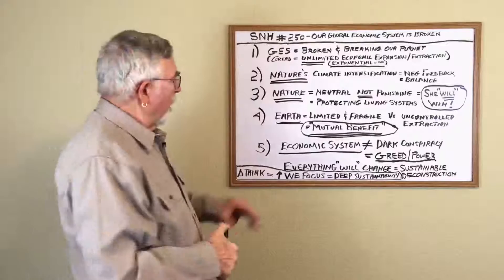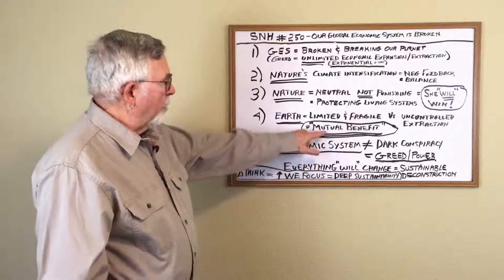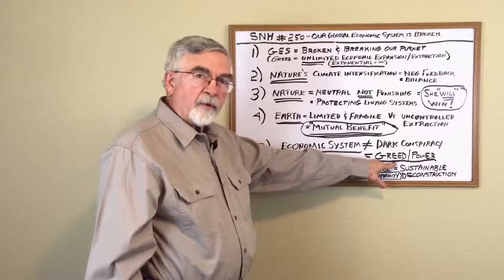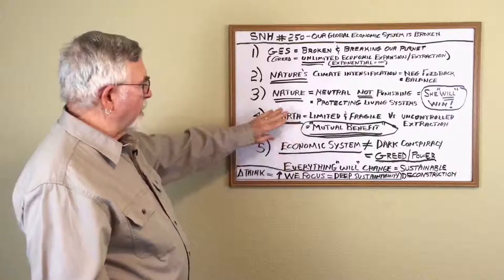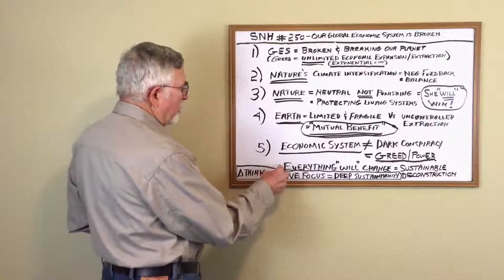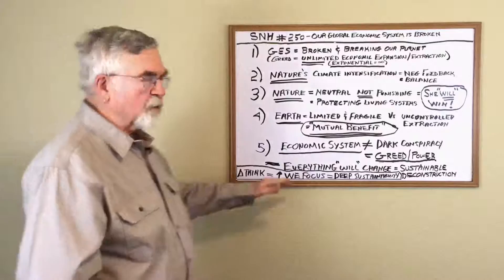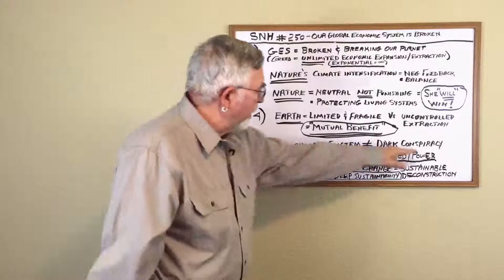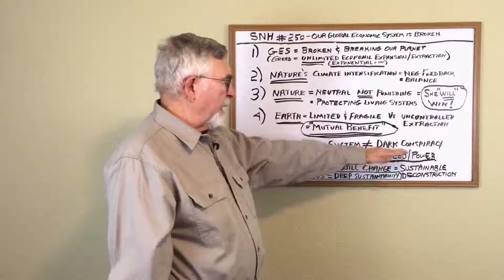So if we're going to have an economic system that's going to work and provide mutual benefit, because right now it's only providing benefit for the one percent, literally, then we have to begin to think about the concept that everything, and this is why the petroleum industry and large multinational corporations, why they're fighting it. Because they know that the minute they recognize and accept the fact that the economic system is broken, it's based on greed and power.